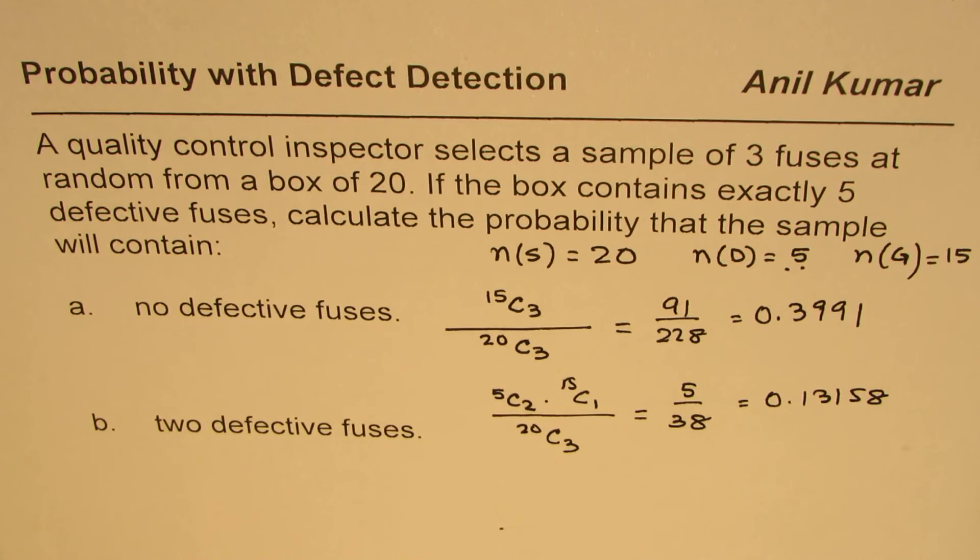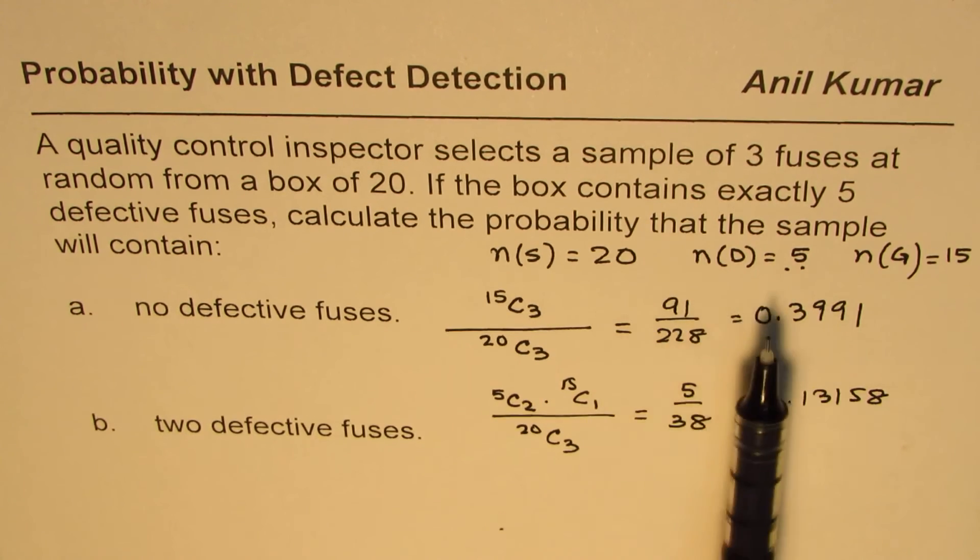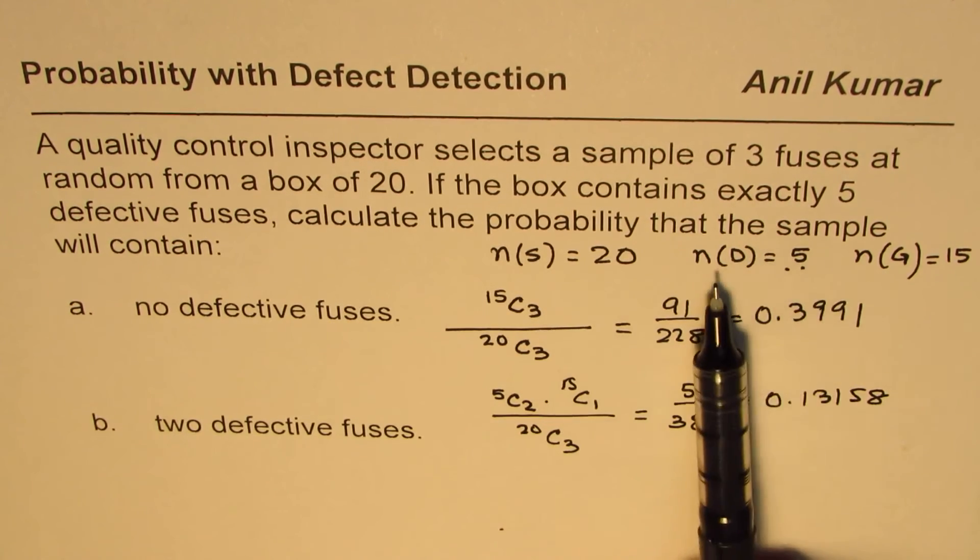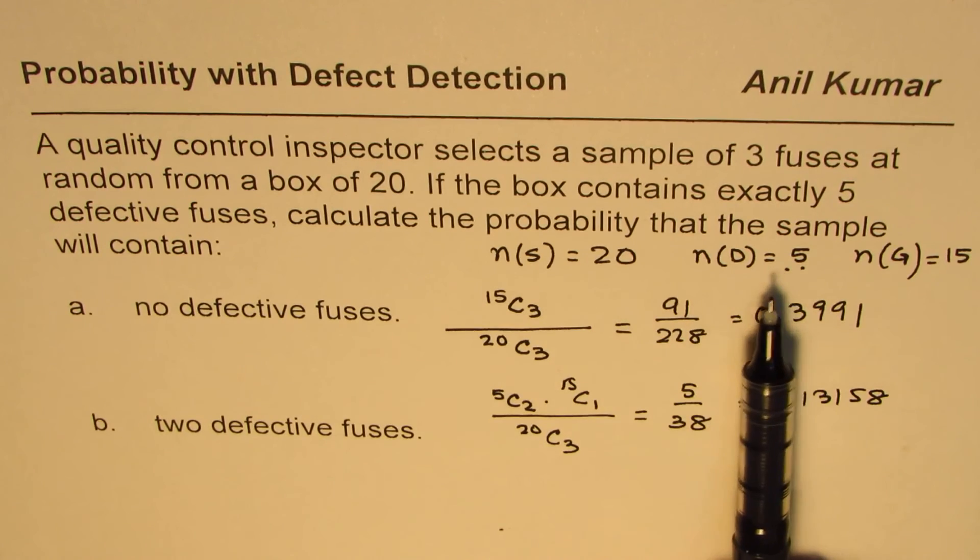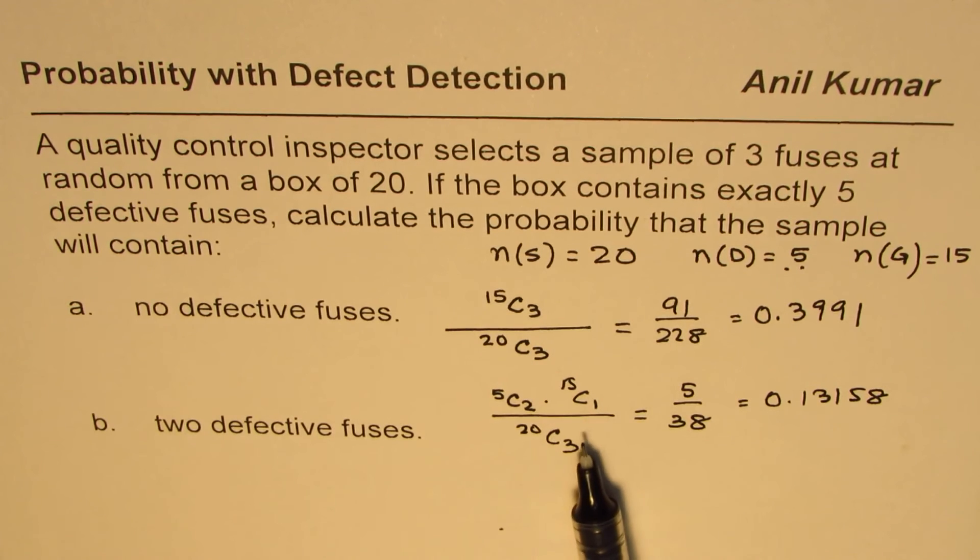So I hope that helps. So the concept of selecting defective or good pieces is very simple. You can see from here, break it down to number of pieces which are defective, the number of pieces which are good, and then use combination to find the answer. I hope that helps. Thank you and all the best.